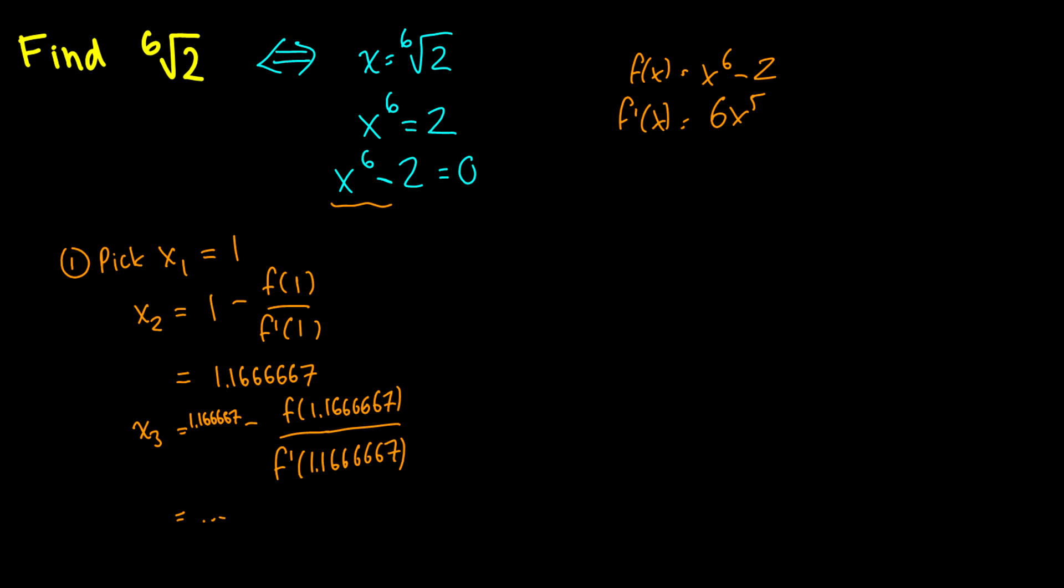So then our x_3 is going to be some other value, and of course I'm not going to do every single step here, but eventually we're going to get x_5 is going to be equal to 1.12246205 and our x_6 value is going to be the same thing. So at this point we know that these two values are equal, so we can say that it's accurate to eight decimal places at x_5. So we only need five iterations to find that it is accurate to eight decimal places.